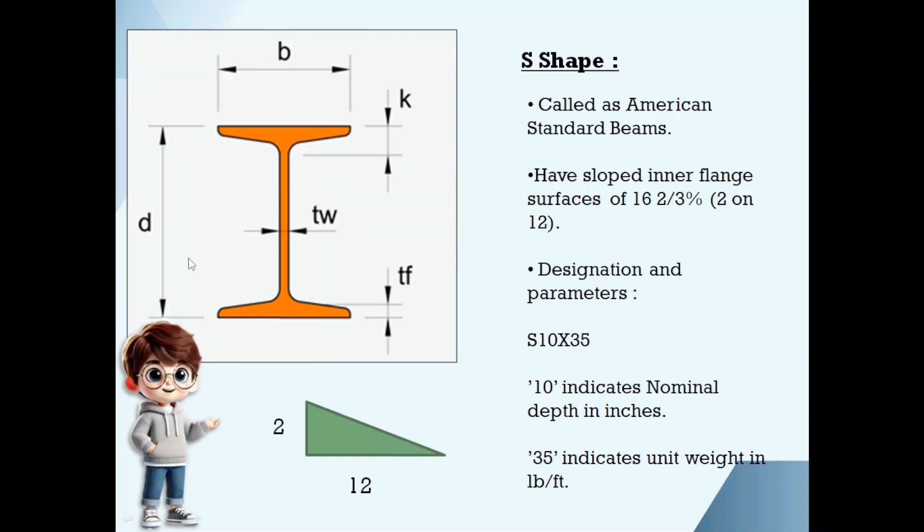S shapes are also called as American standard beams. These have sloped inner flange surfaces. The slope is equal to 2 on 12.